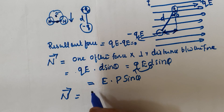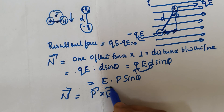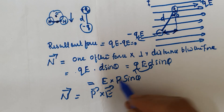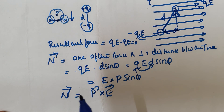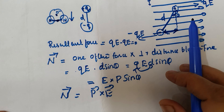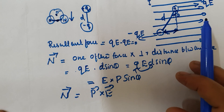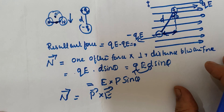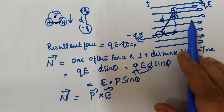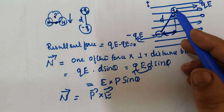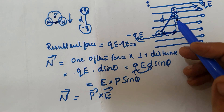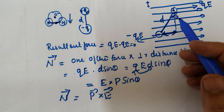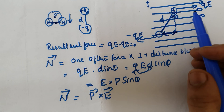The torque acting on the dipole can be represented in vector form as p cross E. Under the action of this torque, which arises from a pair of equal and opposite parallel forces, the dipole will be set into oscillation and will eventually be aligned parallel to the applied electric field.